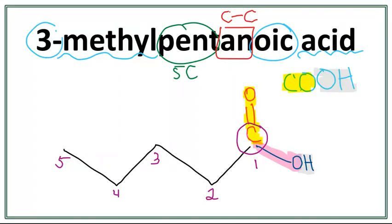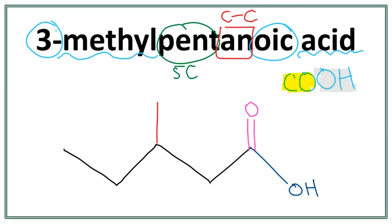So the methyl is attached on the third carbon, which is right here. So let's get rid of these numbers and let's attach the methyl on the third carbon. So this is the structure for 3-methylpentanoic acid.